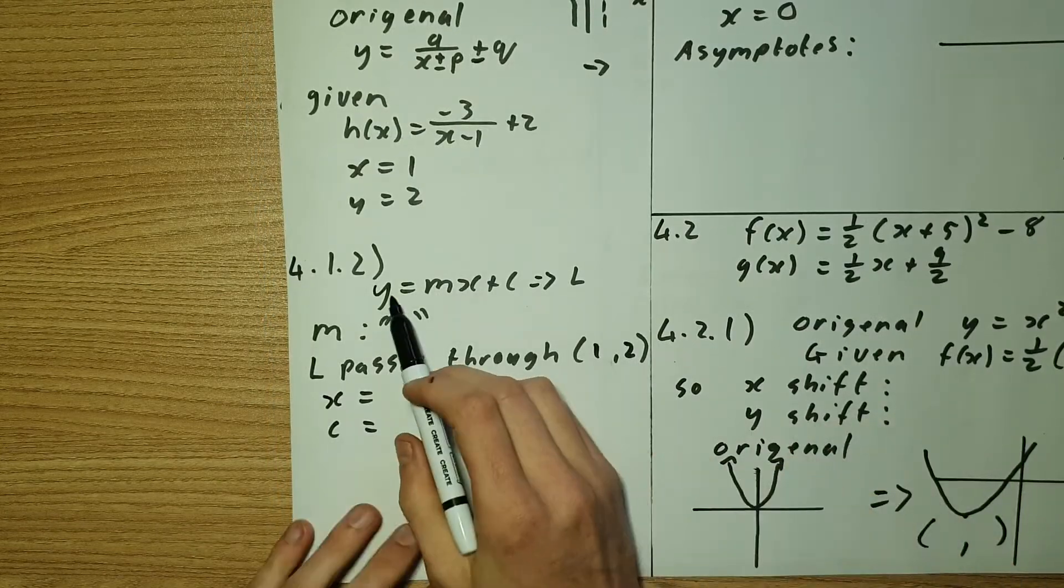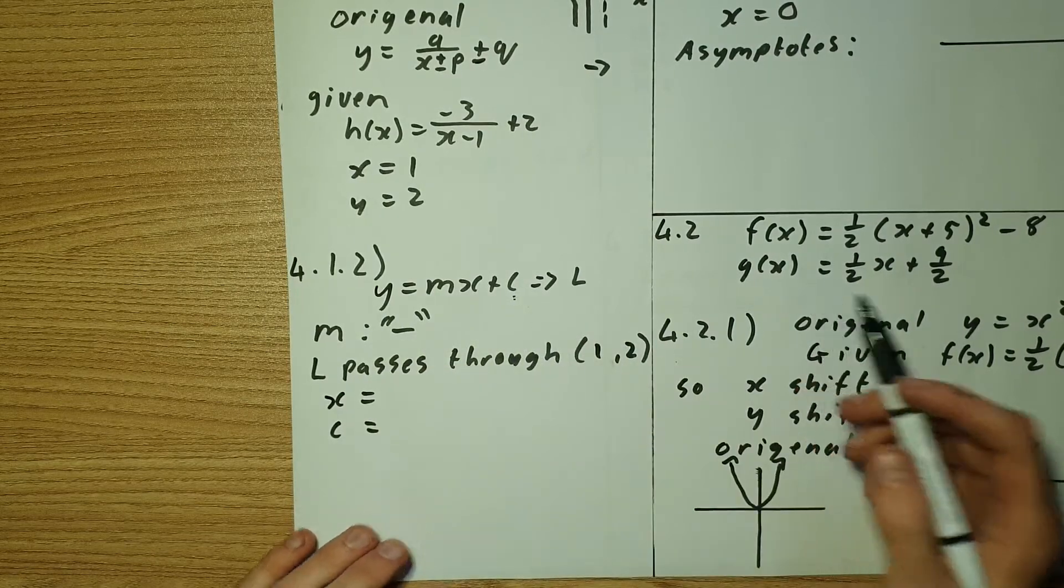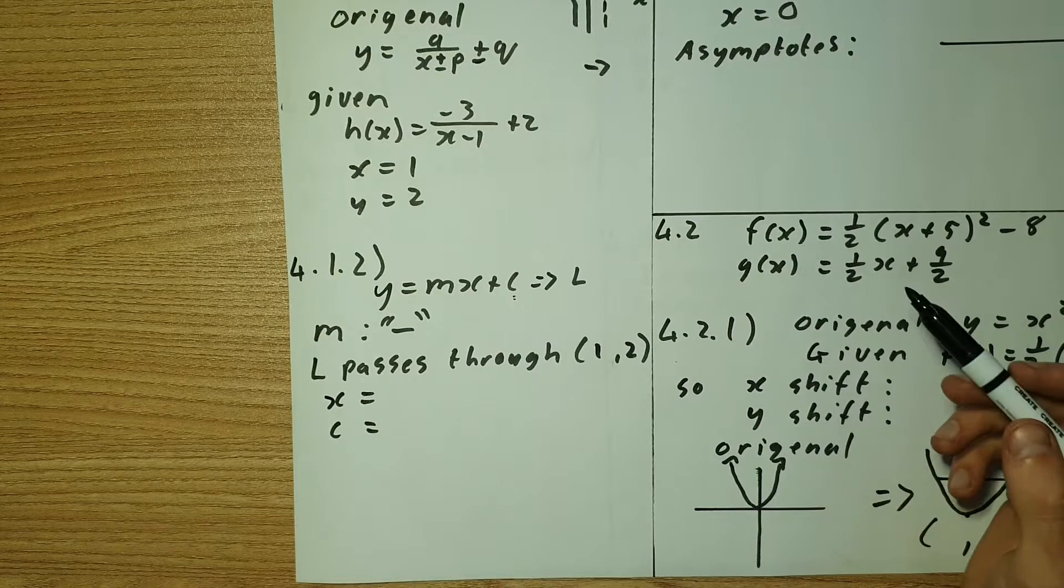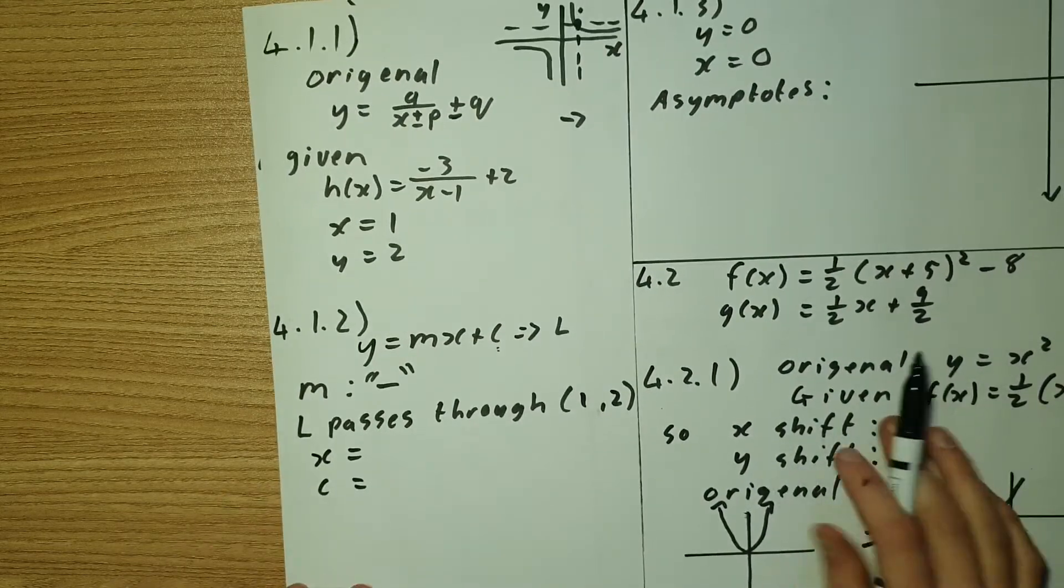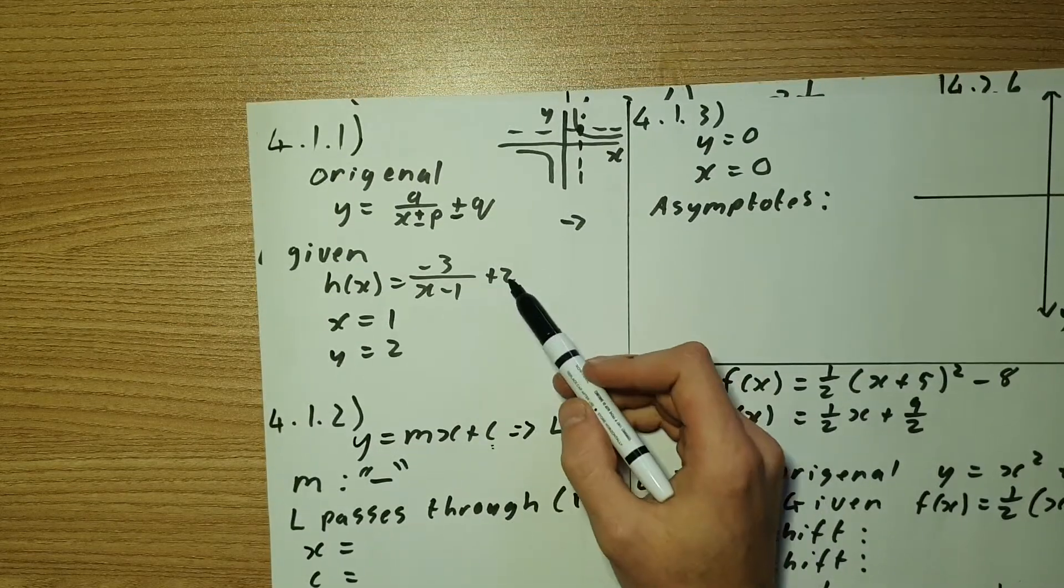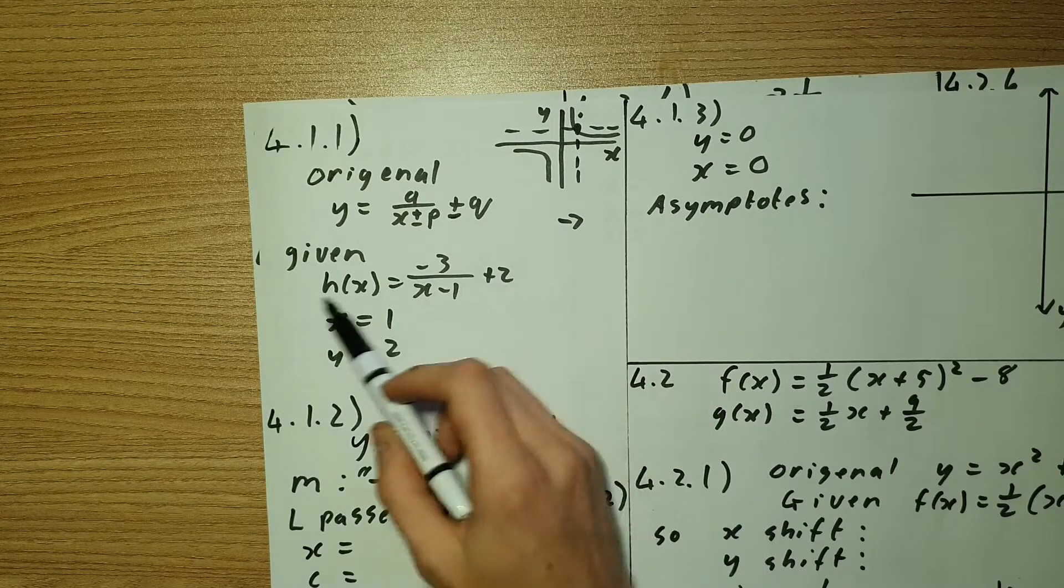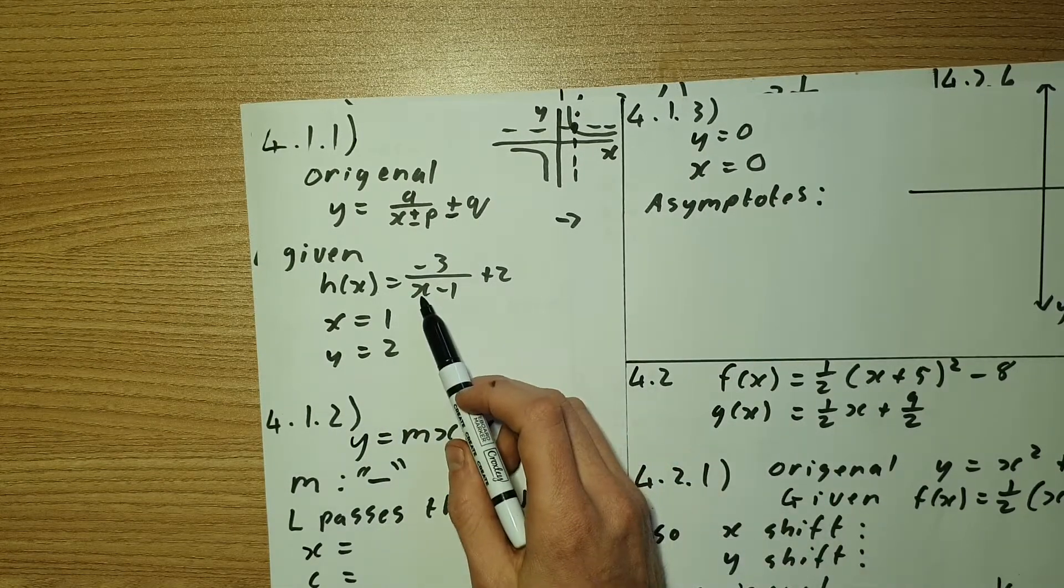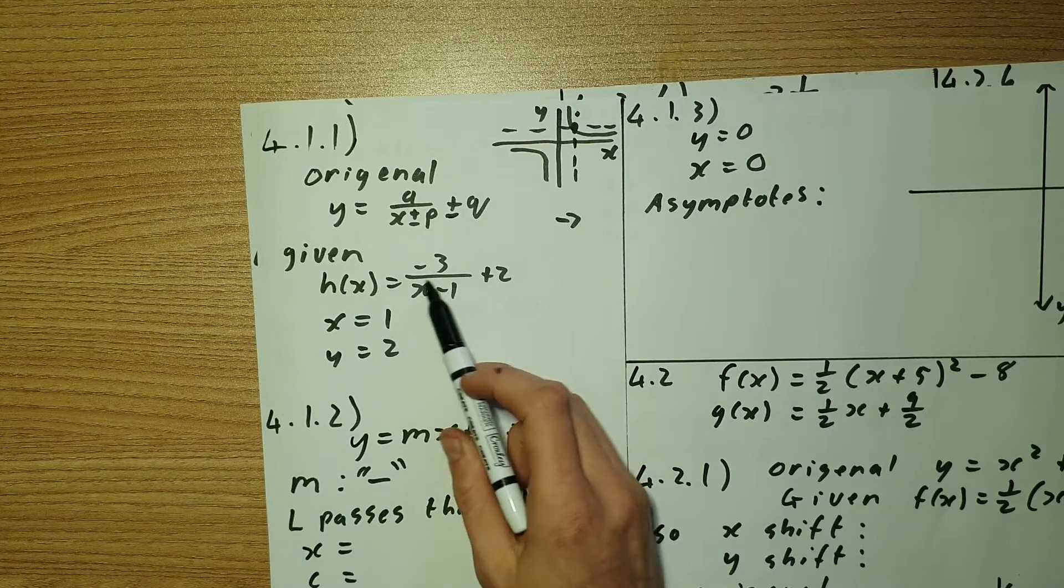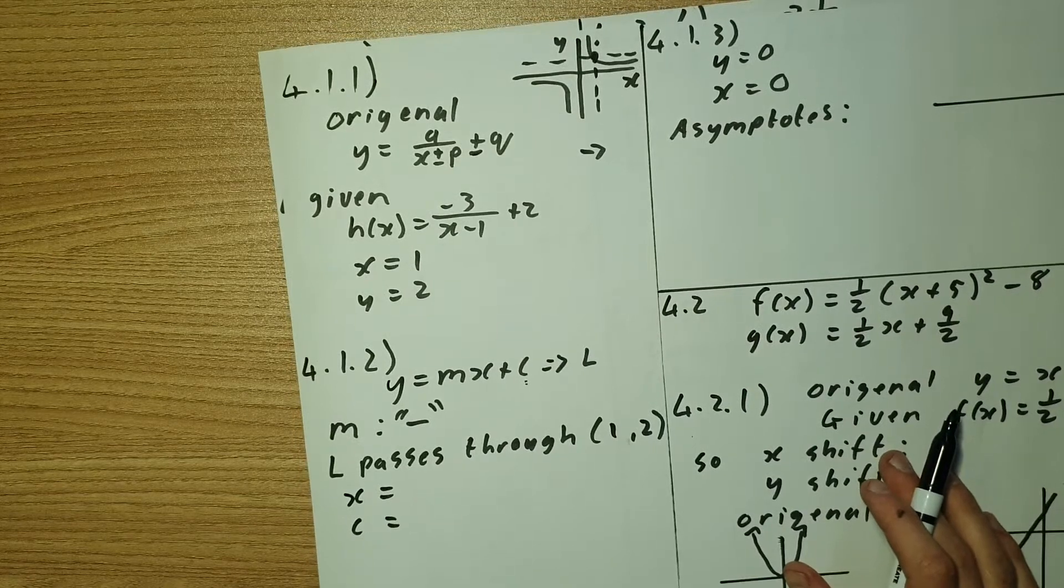So you can use any way of getting this formula. You can use y minus y1 equals m x minus x1 if you want or if you look carefully we can see that the y-intercept will be at plus 2 because it'll be the same for this graph. And we can see that x is x minus 1.